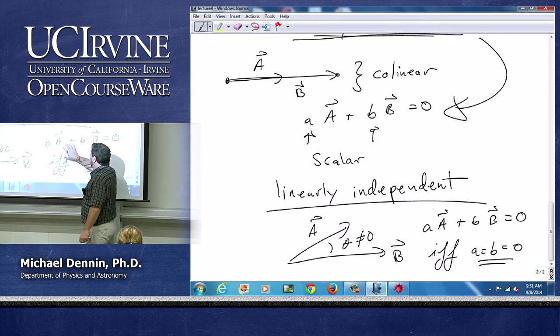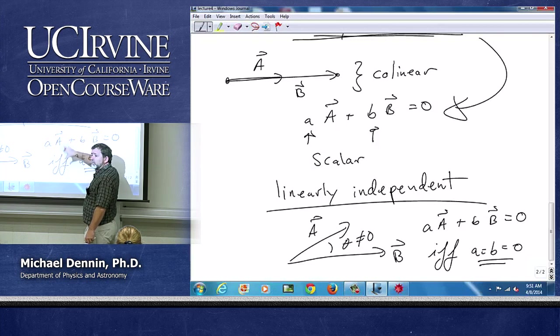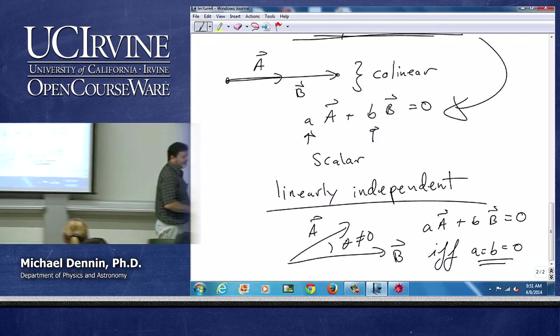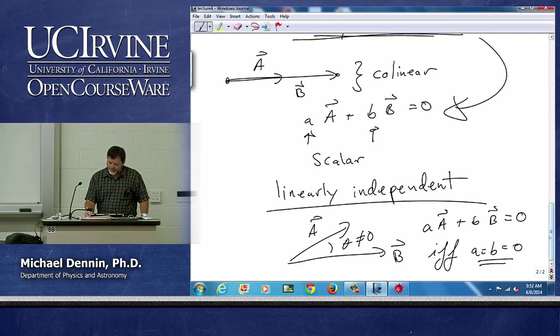And this is a general idea that we extend to any sort of vector space. We're going to use this idea a lot later. That things are linearly independent, a set of vectors, if the only scalars that you can multiply them by to add them together to get zero are zero. So we'll extend this to any number of dimensions. We'll extend this to abstract objects. And we'll just use it a lot.